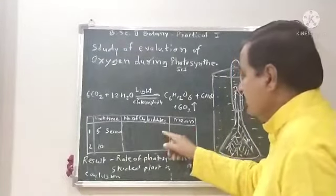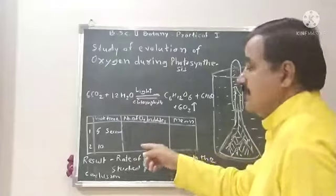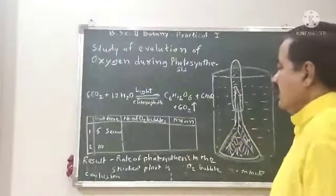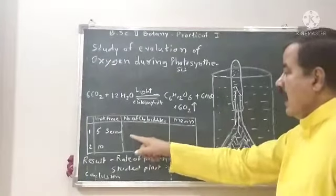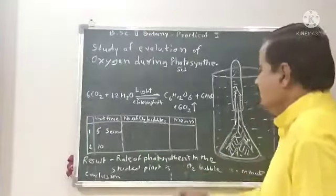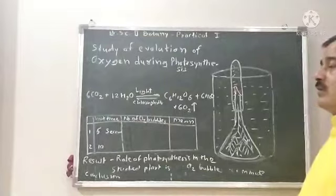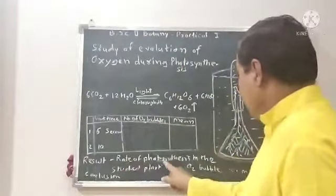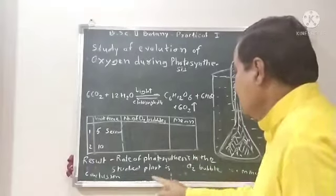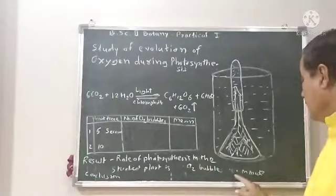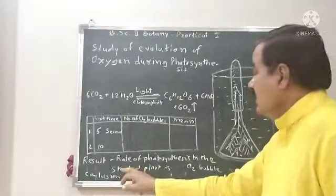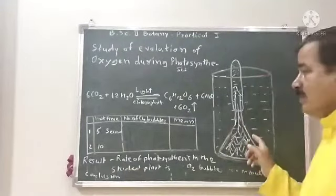The bubbles are released during photosynthesis: 5, 6, and so on, as the light increases. The result shows that the Hydrilla plant produces O2 bubbles per minute.